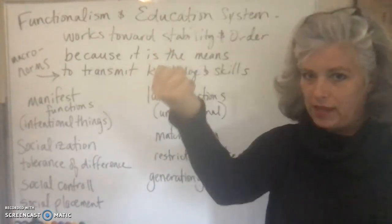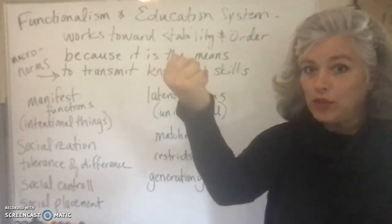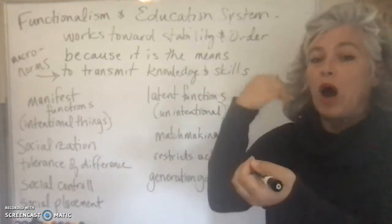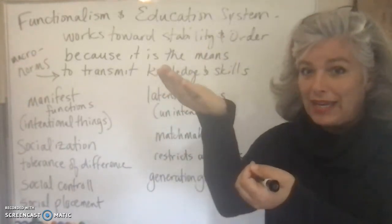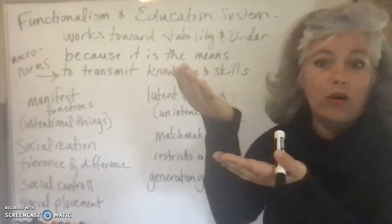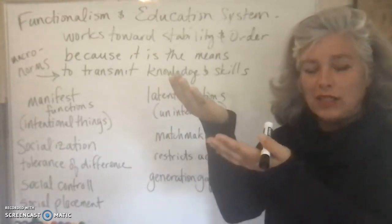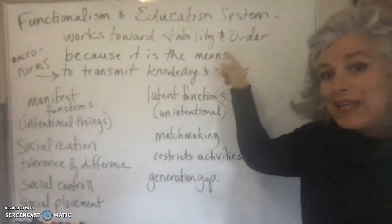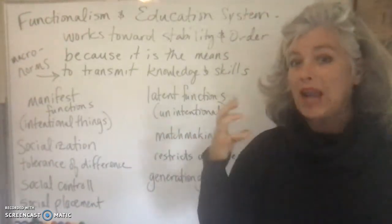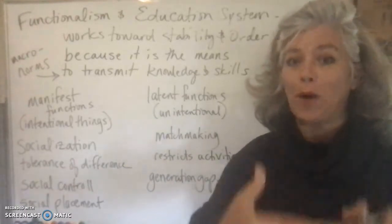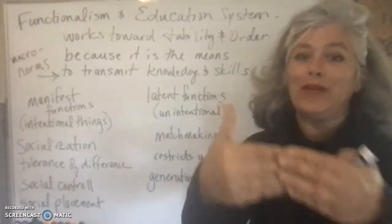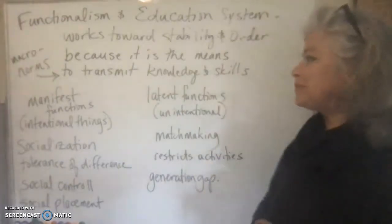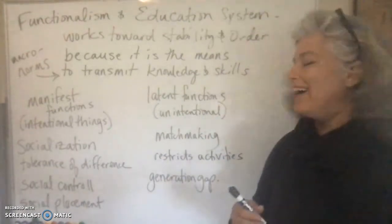A functionalist would immediately conclude that the norms in the USA for education level are set, and therefore we need a mechanism to fulfill those norms — because not all households have the same education level. So if the norm is a certain standard, we need a standardized pathway for as many people as possible to achieve it. That's the education system. A functionalist says it works toward stability and order because it is the standard way society has for knowledge to be imparted by experts to those who need it. K through 12 is the minimum level required right now in the USA.